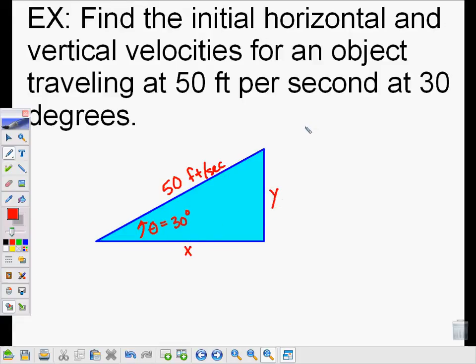Just going back to what we did on the previous slide, we said that the cosine of theta, which is 30, is equal to x over v, which is 50 in this case. Or 50 times the cosine of 30 is equal to x.